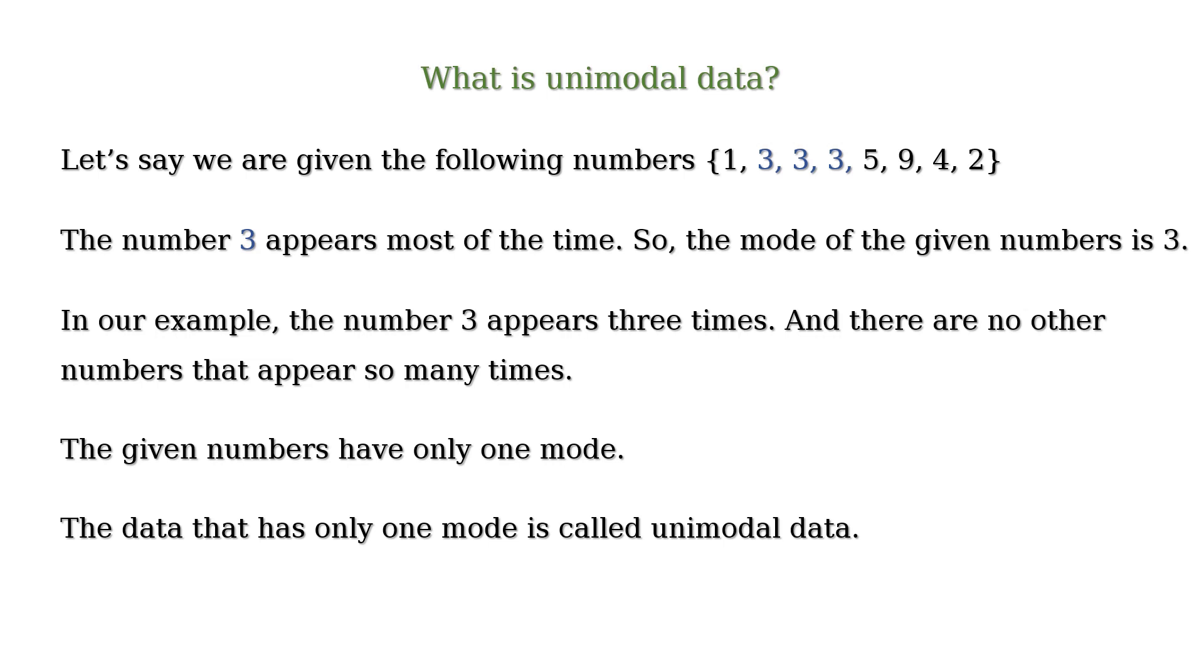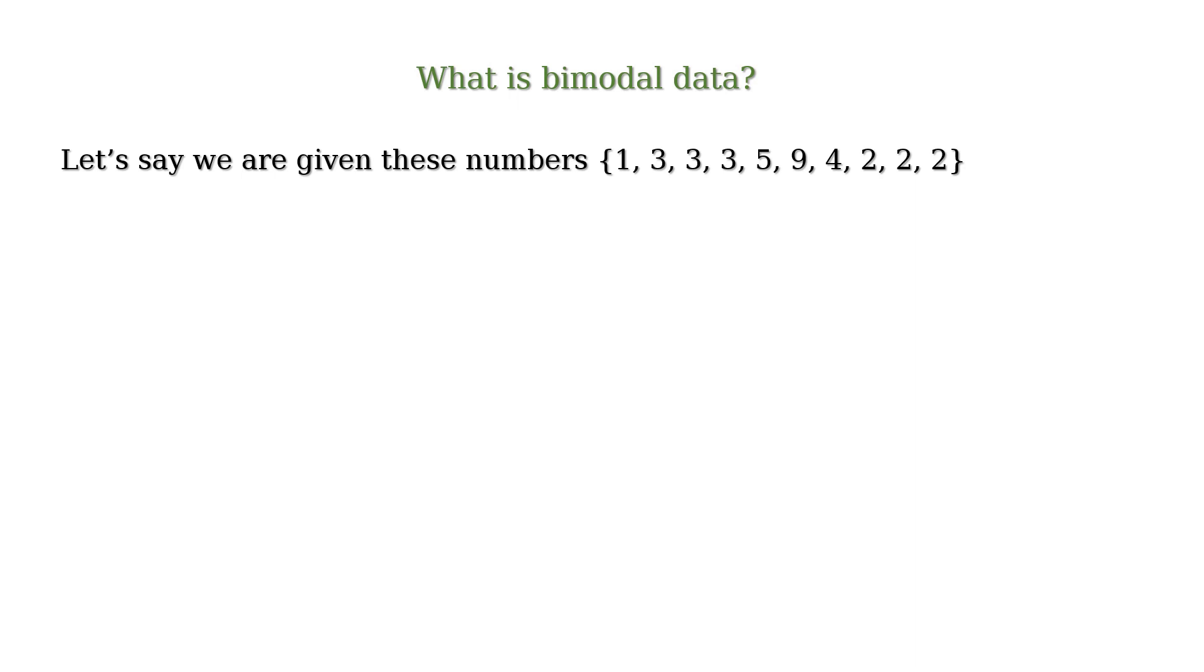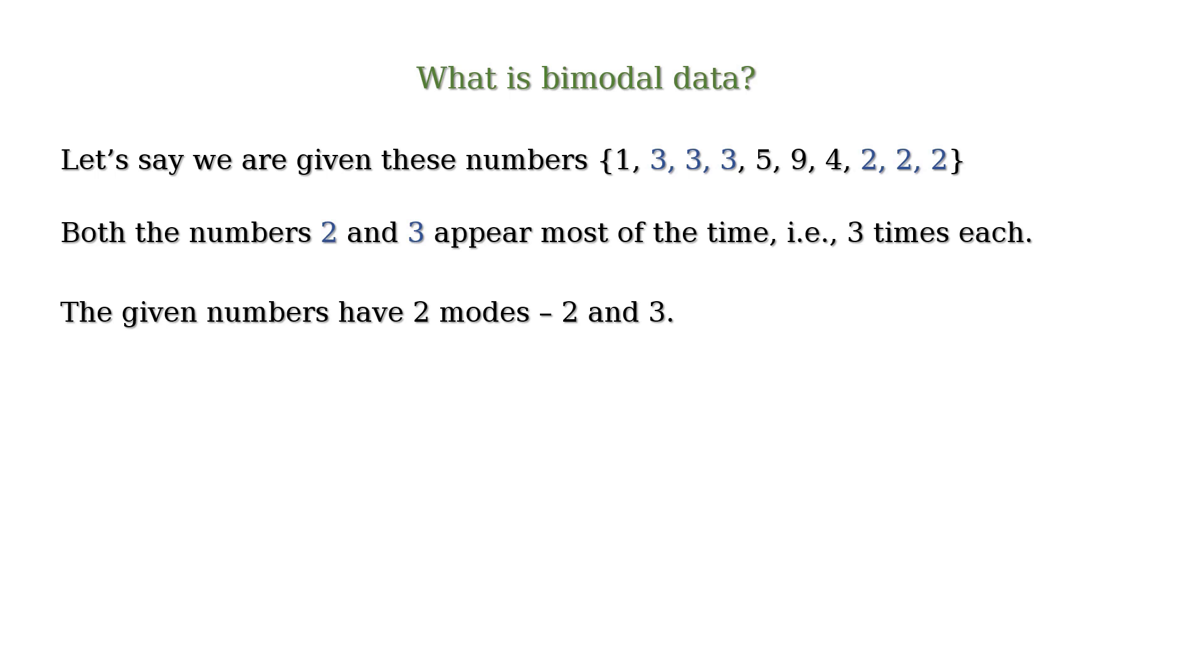Now let's look at another set of numbers. Let's say we are given these numbers. Here both the numbers 2 and 3 appear most of the time, that is 3 times each. So the given numbers have 2 modes: 2 and 3.